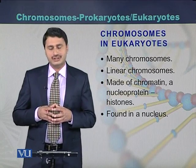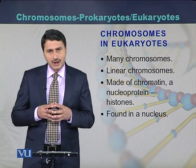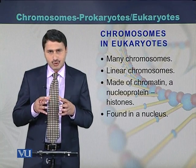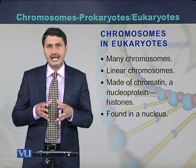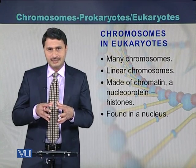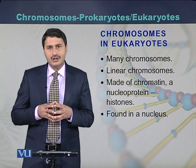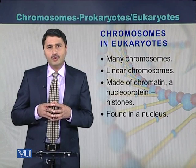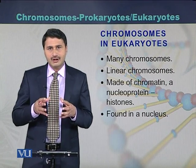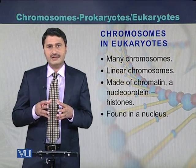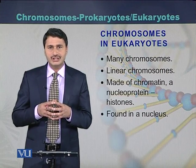Chromosomes in eukaryotic cells: there are many chromosomes in a eukaryotic cell. They are present in the nucleus, a specialized region within the cell. Eukaryotic chromosomes are made up of chromatin, which is a fiber made of DNA as well as certain proteins called histones.